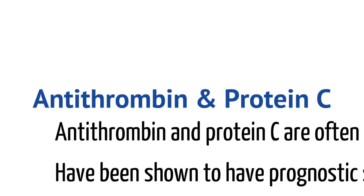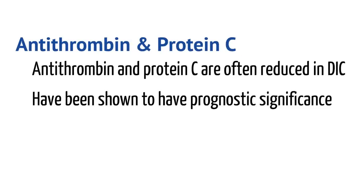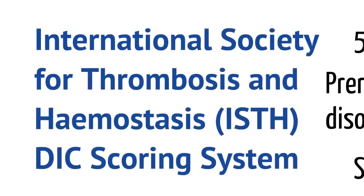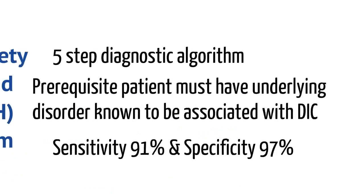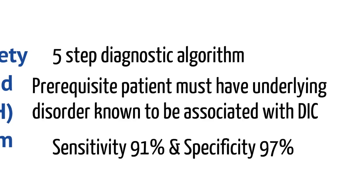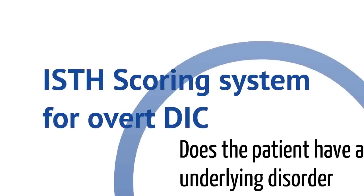Now let's talk about antithrombin and protein C. These are involved in the coagulation cascade and are often reduced in DIC. Though they do not diagnose DIC, they have been shown to have prognostic significance. The scoring system we use in DIC is part of the International Society for Thrombosis and Hemostasis DIC Scoring System. It's a fairly simple five-step diagnostic algorithm with a 91% sensitivity and 97% specificity, making it very good at diagnosing patients who have DIC.